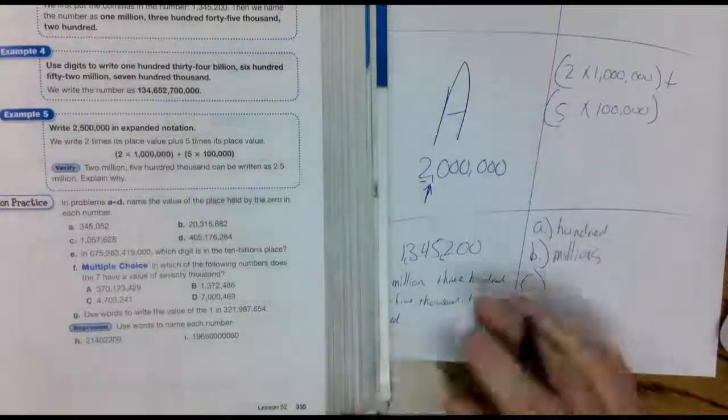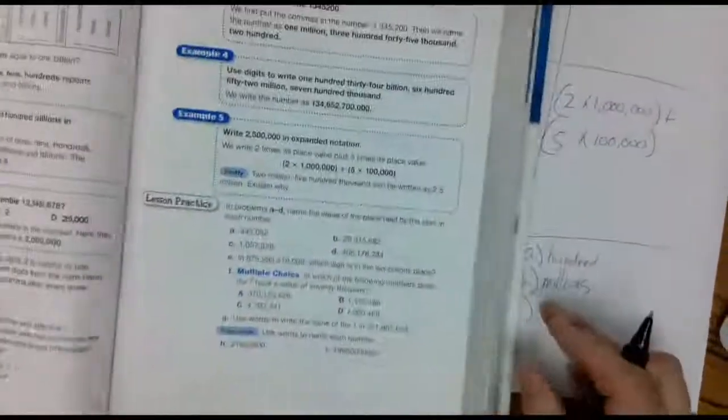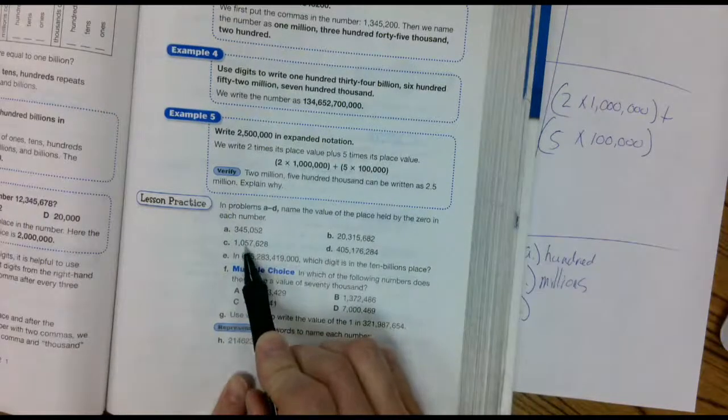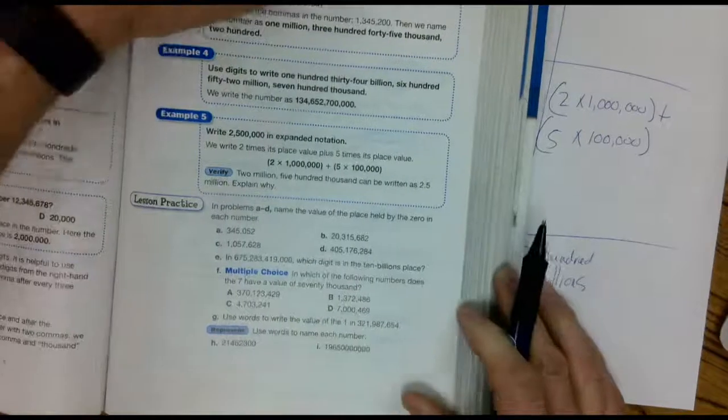Check out C. C says, ones, tens, hundreds. One thousand, ten thousand, hundred thousand.